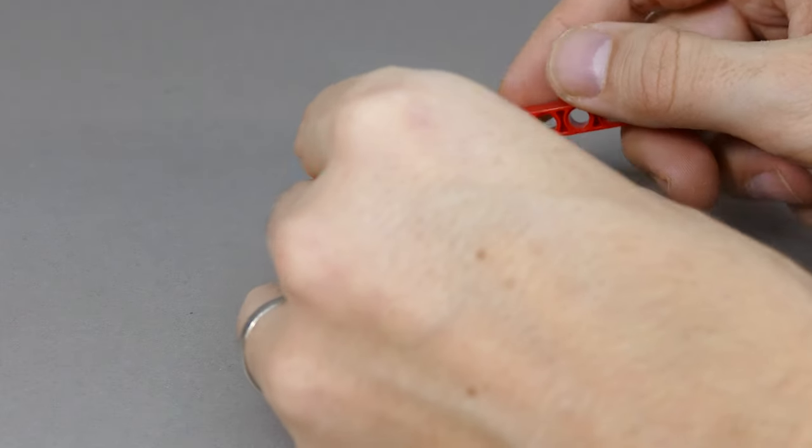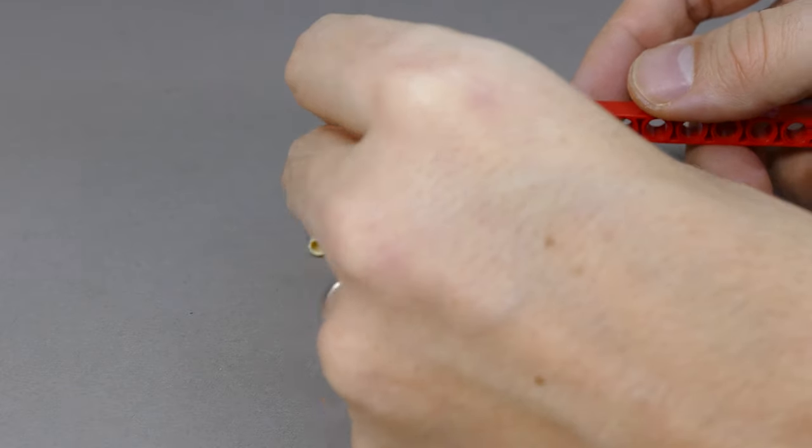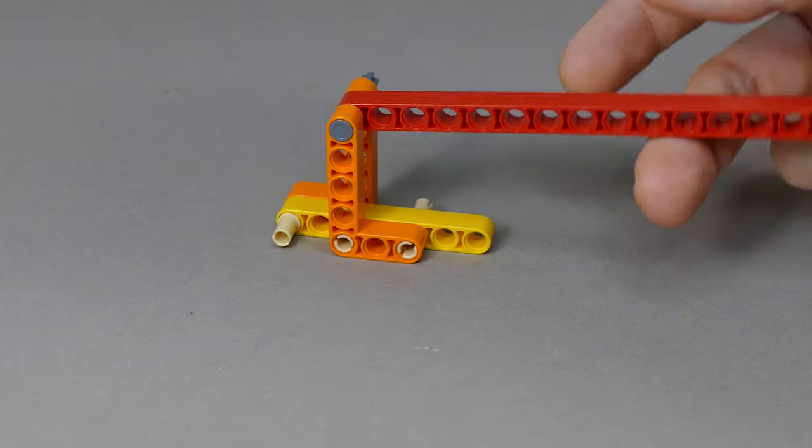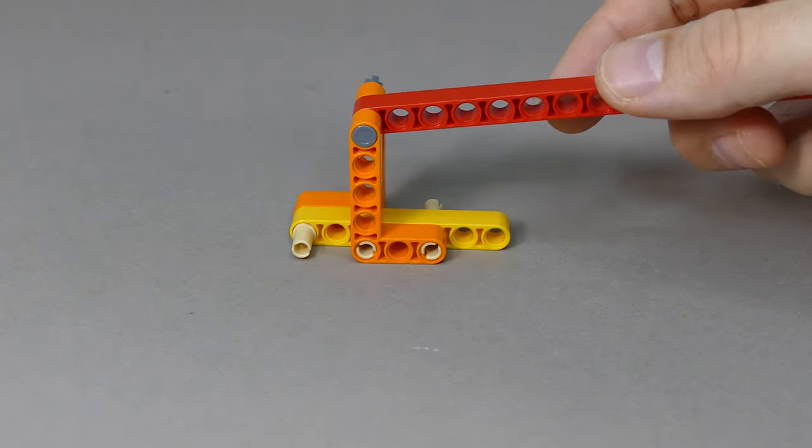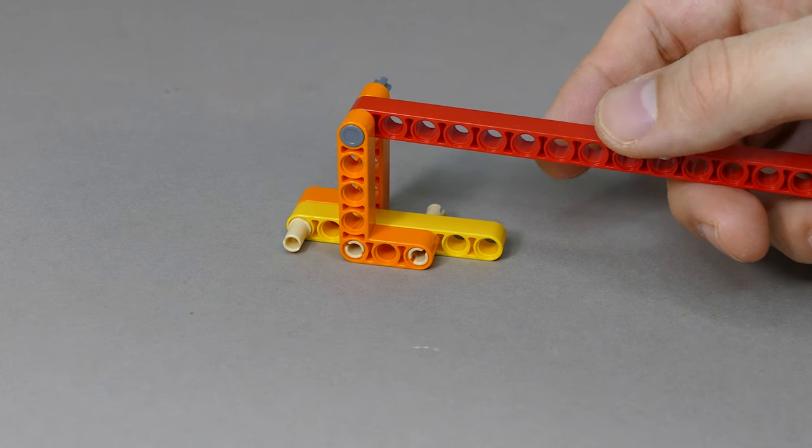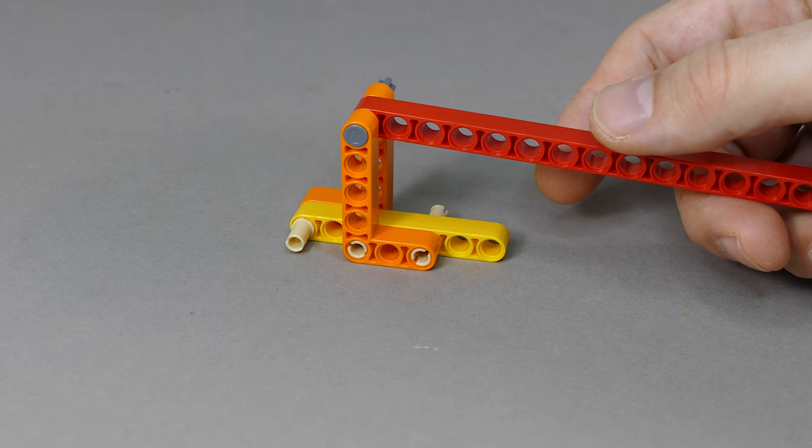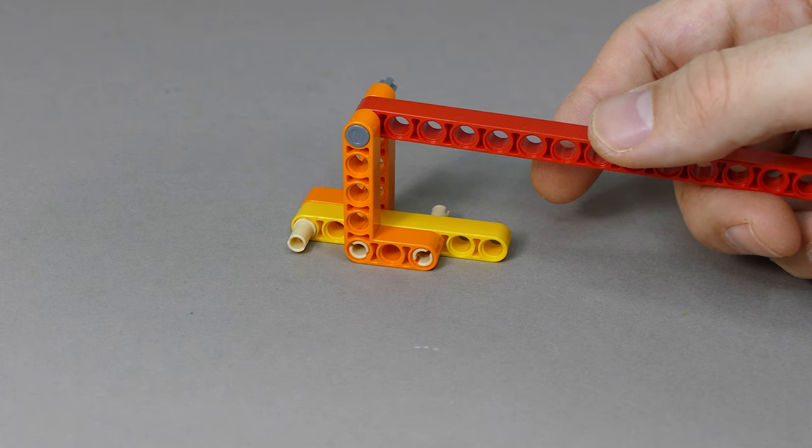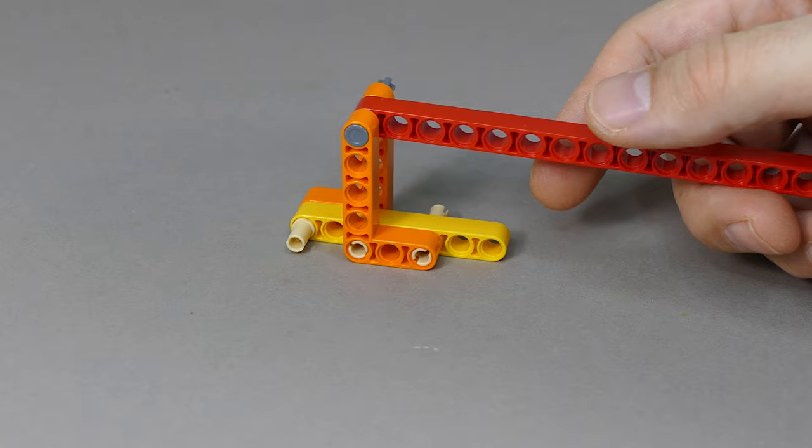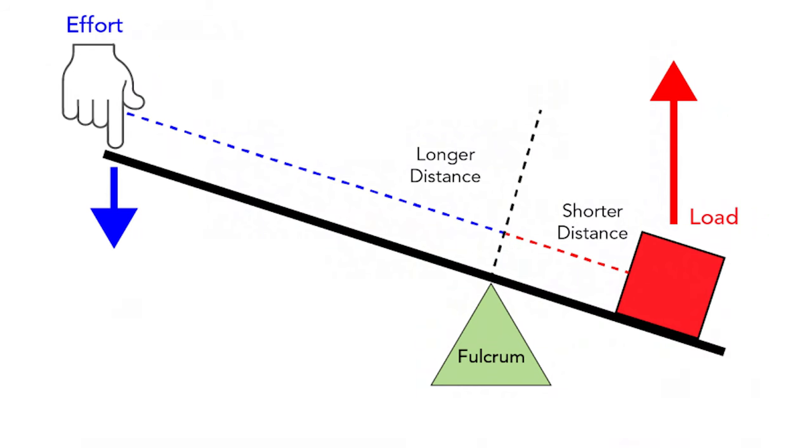You can move the fulcrum all the way to the end and create a single-sided lever, which is pretty much a door handle. Other examples of basic levers include scissors, pliers, wrenches, other types of tools, water pumps, and you name it - you can find them pretty much everywhere around you.